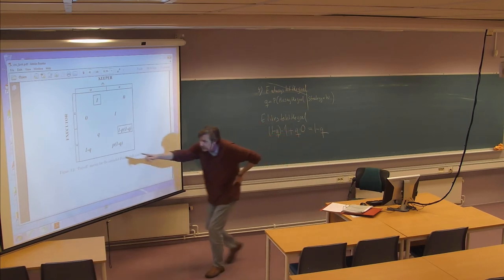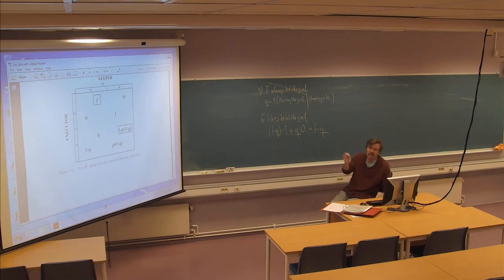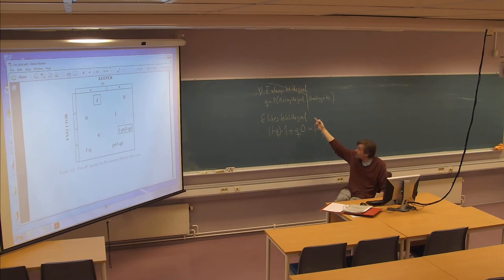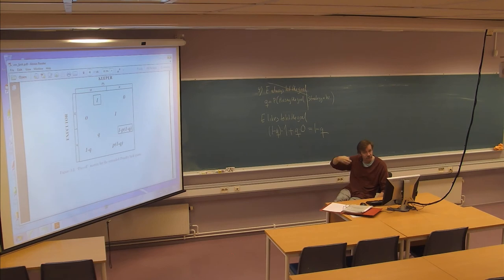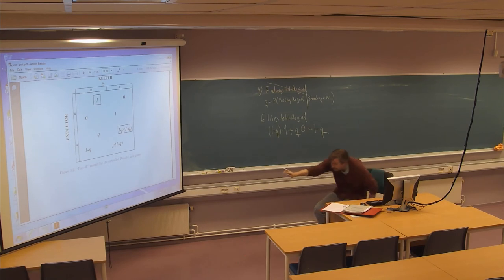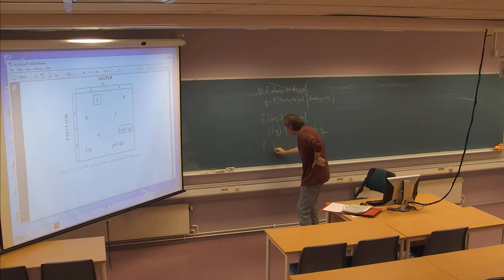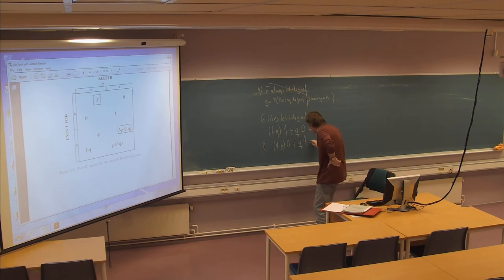A nice thing about using a zero-one payoff structure is that the expected payoff turns out to be the same as the probability. One-minus-Q is the probability of a goal, which equals the expected payoff. So we just need to compute probabilities — we don't need to go through additional mechanisms as long as we use a zero-one payoff structure. The explanation for the small Q in the keeper's cell is analogous: the keeper likes a no-goal, so a miss — with probability Q — makes him happy. Hence we end up with Q there.